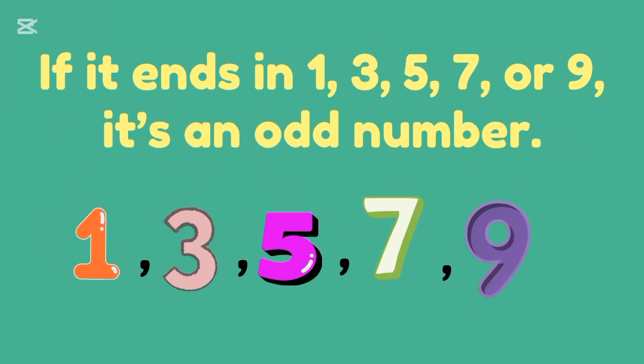If it ends in 1, 3, 5, 7, or 9, it's an odd number. Remember it. It's a very nice rule.